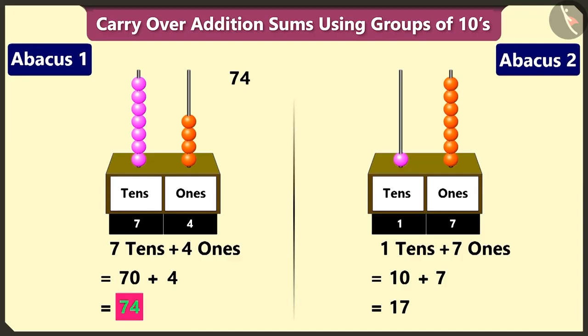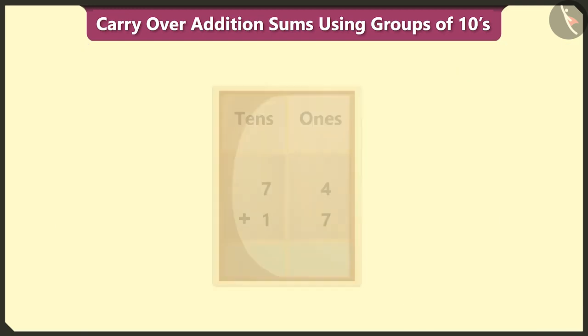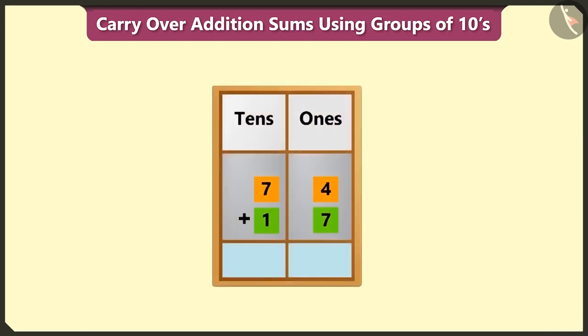Now we have to add 74 and 17. But before that, we have to write both the numbers in the ones and tens boxes.